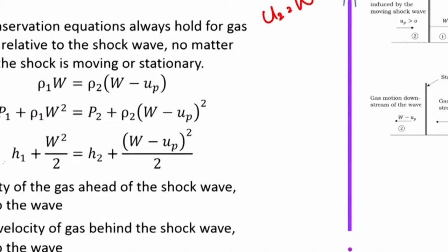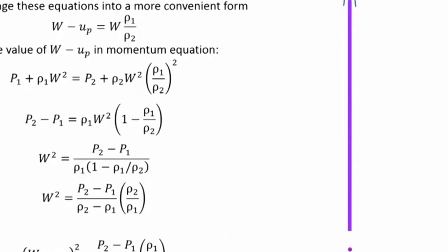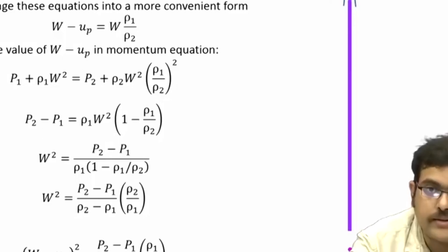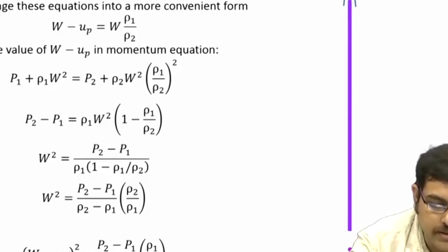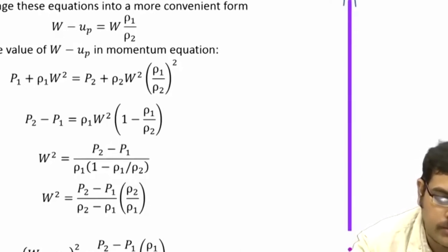We can write the conservation equations in terms of w and w minus uₚ. Mass conservation: ρ₁w = ρ₂(w − uₚ). Momentum conservation: p₁ + ρ₁w² = p₂ + ρ₂(w − uₚ)². Energy conservation: h₁ + w²/2 = h₂ + (w − uₚ)²/2. These equations are the same as for a stationary shock wave, and we can proceed with an analysis very similar to what was done for the Hugoniot equation.